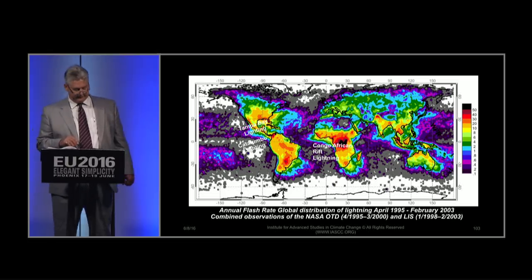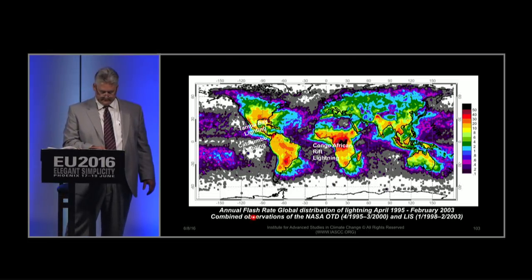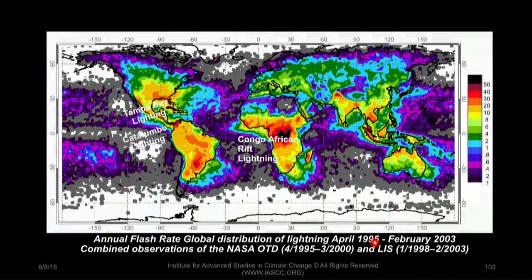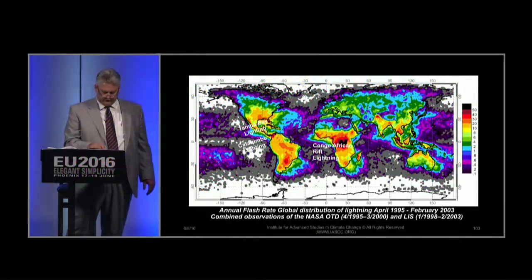Looking at the global lightning annual flash rate — this is from NASA satellite data, about eight years of annualized composite data. You see a huge concentration in the Congo — this is the most lightning. You also see here's your Catatumbo that we just talked about, right in Venezuela. Tampa Bay lightning in the Gulf of Mexico. There's a spot near the Himalayas and Uruguay-Argentina relationship to lightning down there. I just showed you the relationship to the Catatumbo lightning. I want to talk a little bit more about what's going on up in Tampa Bay.